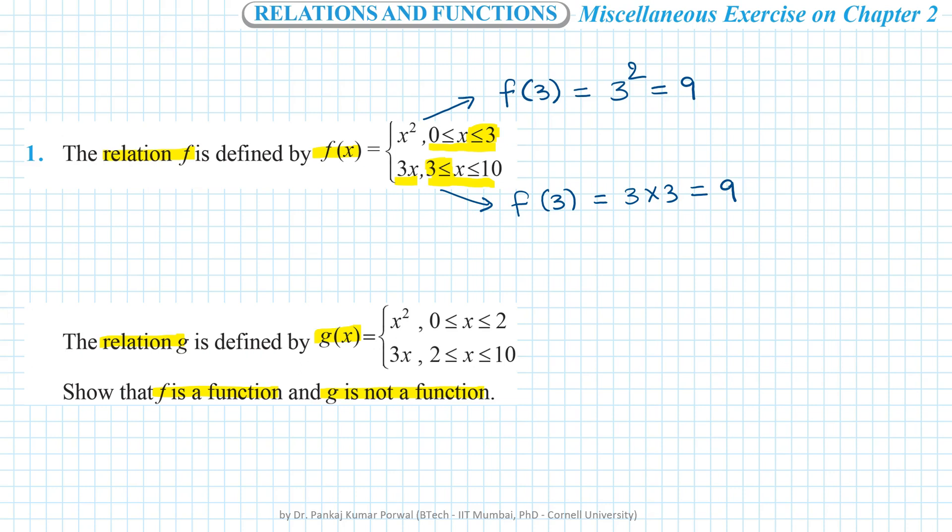Now if we look at definition of g, here we have same situation as f. We have possibility of more than one image for x equals to 2 because we have two definitions that are applicable at x equals to 2.